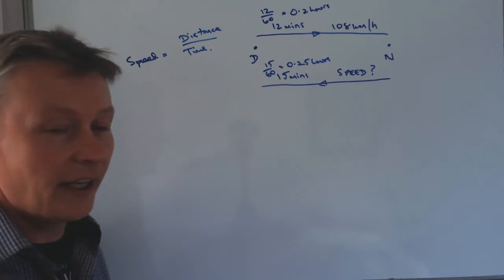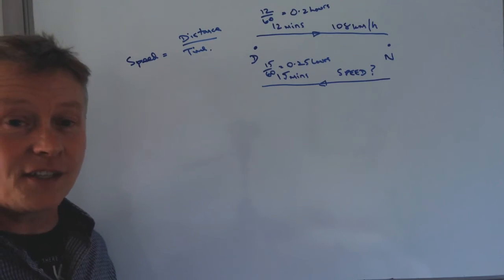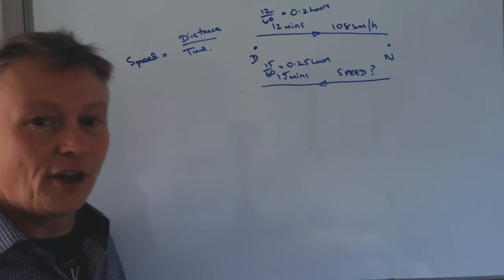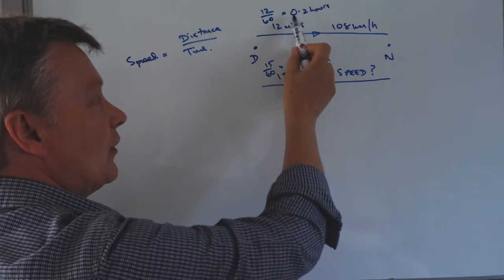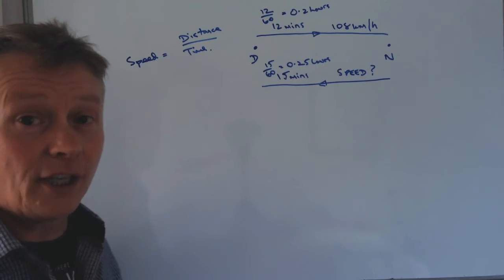So similarly with the return journey, it's 15 out of 60, so that's 0.25 hours. So when you've got this as part of an hour then you're able to calculate.